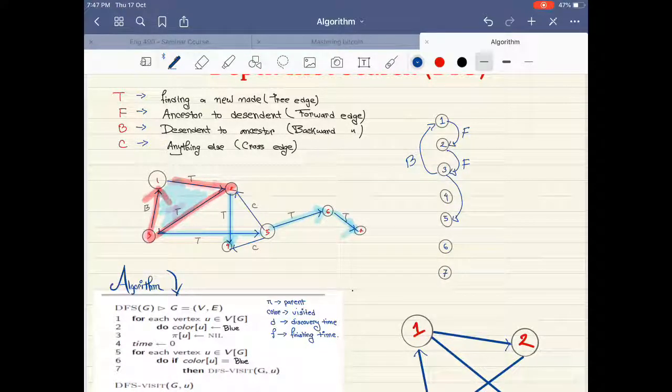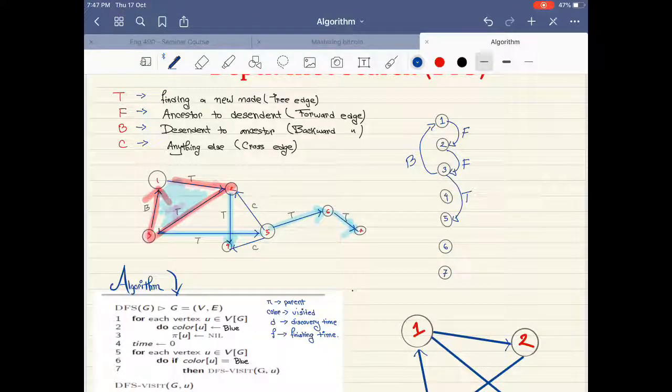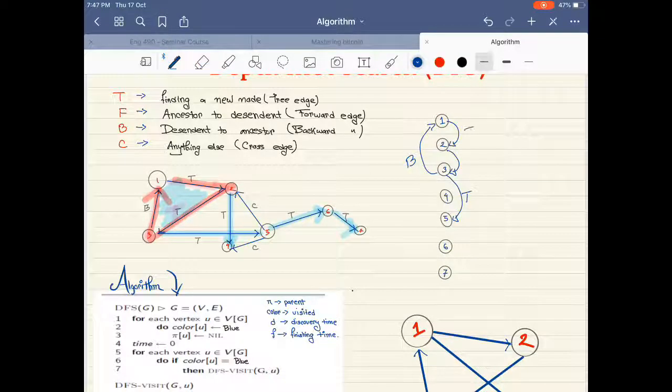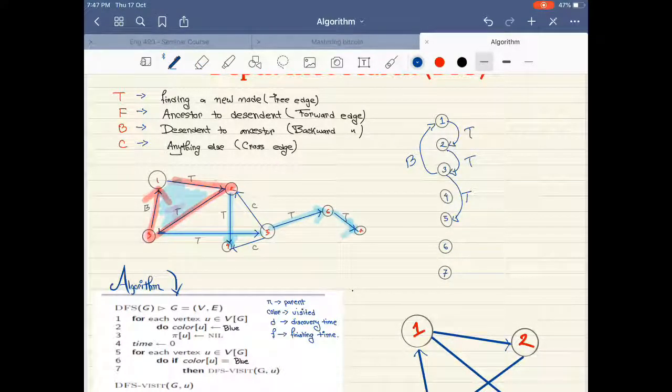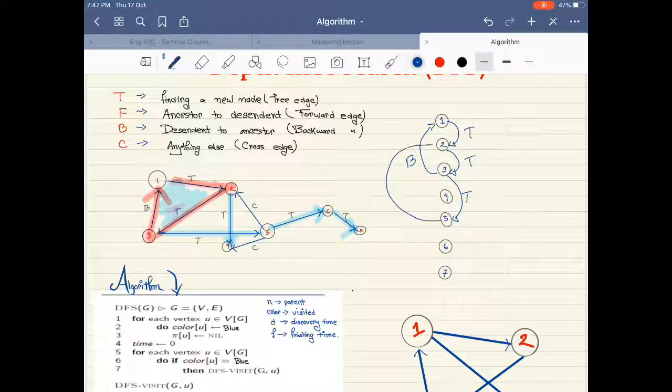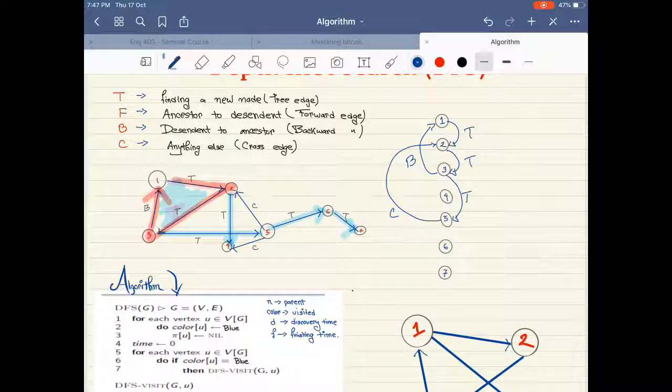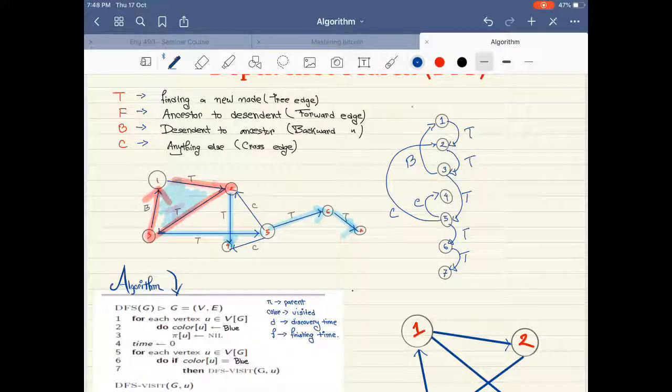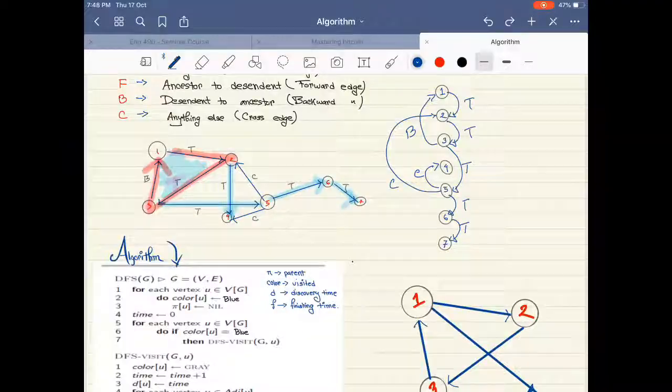This is a tree edge. So these wouldn't be F, this would be T. My bad here. So from five to two, that would be a cross edge. From five to four, that also would be a cross edge because it's not the child. From five to six, we have a tree edge. And from six to seven, we also have a tree edge. So this is the main representation of this whole graph in a more easier pattern.